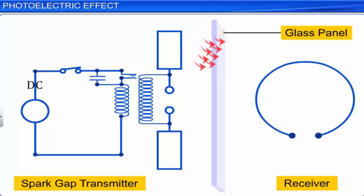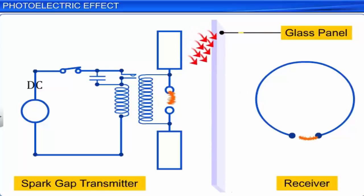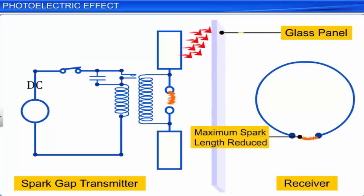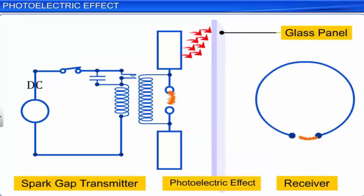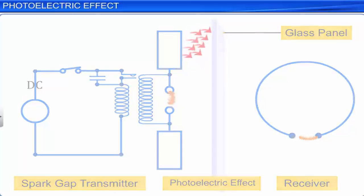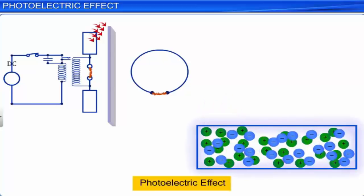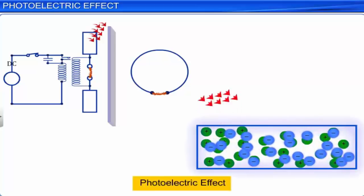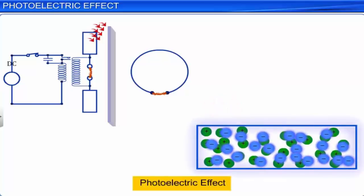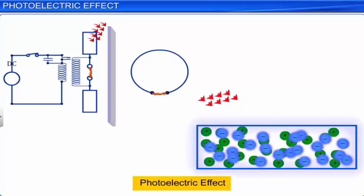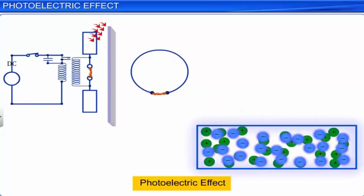the glass panel absorbed ultraviolet radiation. This radiation had helped the electrons jump across the gap. Hence, the spark was longer before the glass panel was placed. This was due to the photoelectric effect, because when light fell on the surface, some of the electrons on the surface absorbed enough energy from the incident radiation to overcome the attractive force of the positive ions of the material off the surface.